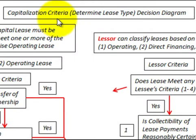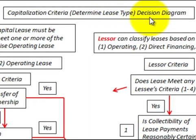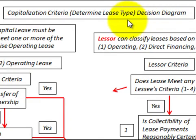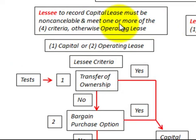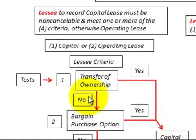Here we're going to be looking at the capitalization criteria to determine the type of lease for various lease transactions, using a decision diagram. First we're going to look at these diagrams and then better define the test criteria. We'll start with the lessee, where the diagram shows either meeting the test criteria — yes — or not meeting it — no — and you proceed on. Let's look at it from the lessee's perspective to record a capital lease.